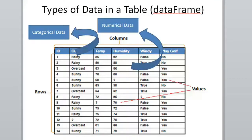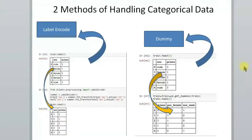The next important thing to know when building a model is that your dataset has multiple types of data. For example, some columns contain categorical data — that means words — while others contain numerical data. You may also have missing values. Before modeling, we must transform the data into suitable types: missing values can be dropped, and categorical data must be converted to numerical data.